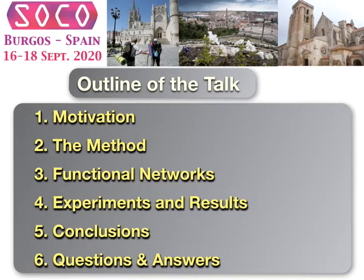This is the outline of my talk. First of all, I will talk about the motivation of this work, then about the method used to solve the problem, then I will explain a little bit about functional networks, then I will proceed with the experiments and results, then the conclusions, and finally questions and answers.